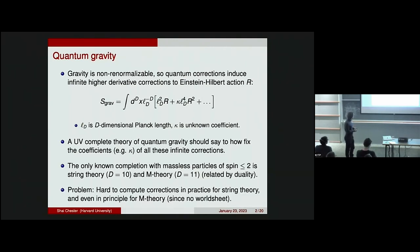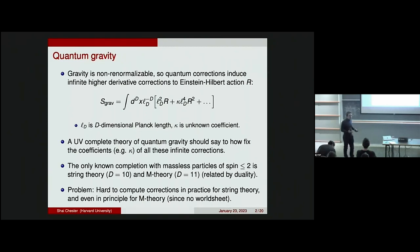We claim that we have a quantum theory of gravity, but can we actually compute all the corrections to Einstein's gravity? The problem is that this is hard. For string theory, we have a world sheet which in principle allows us to compute these corrections perturbatively in the string coupling, but that does not allow us to do it at finite string coupling. For M theory, we don't have even in principle a method to compute these higher derivative corrections, because there's no world sheet — M theory is strongly coupled string theory. So when we claim we have a theory of quantum gravity, we're perhaps slightly exaggerating.